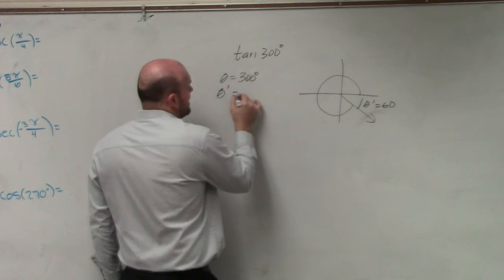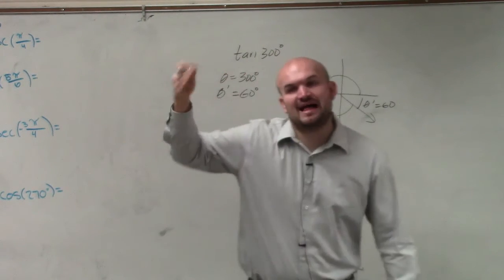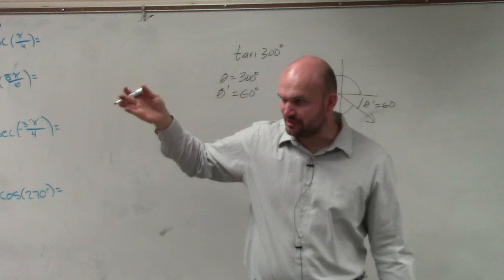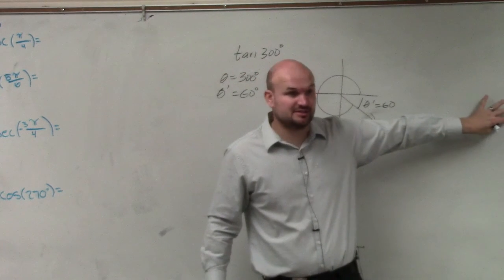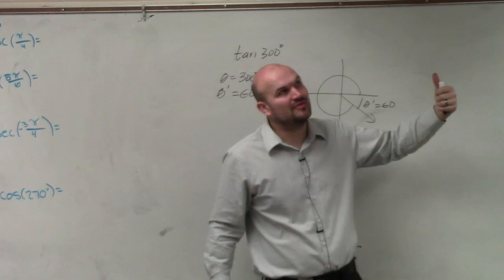So theta prime equals 60 degrees. So I'm going to want to evaluate for tangent of 60 degrees. Because I know what 60 degrees is, right? Because remember the unit circle? I know 60 degrees. That's the same thing as pi over 3.